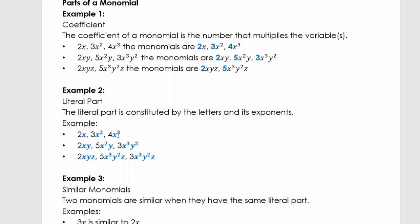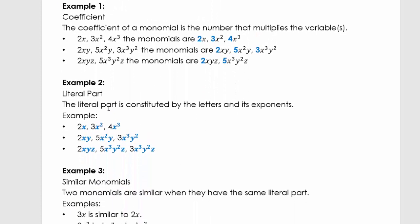Welcome back. In example number two, we're going to look at the literal part of a monomial. The literal part is constituted by letters and its exponents. We have these examples and you will see the letters and exponents are highlighted, like x, x squared, x to the power of 3.